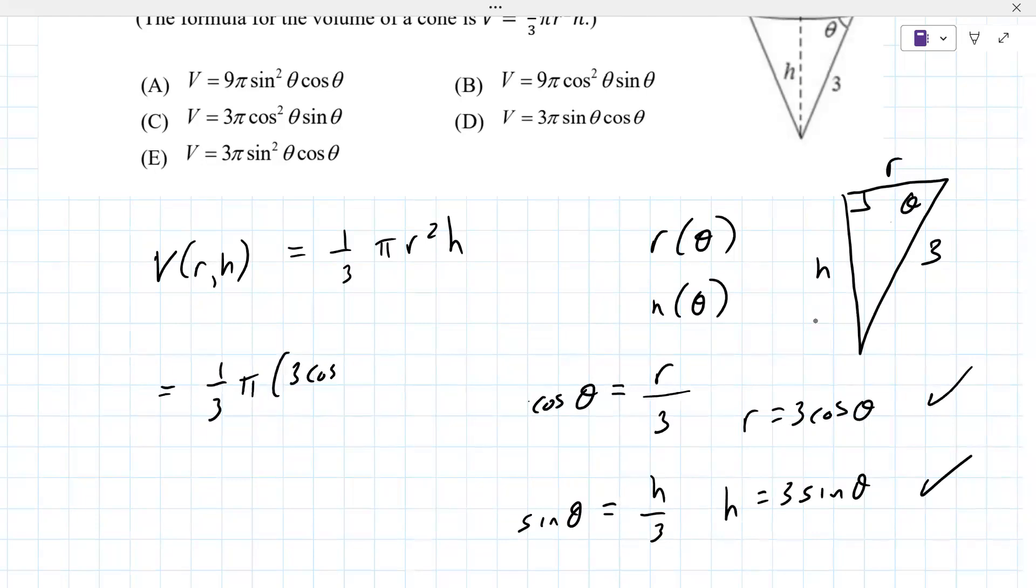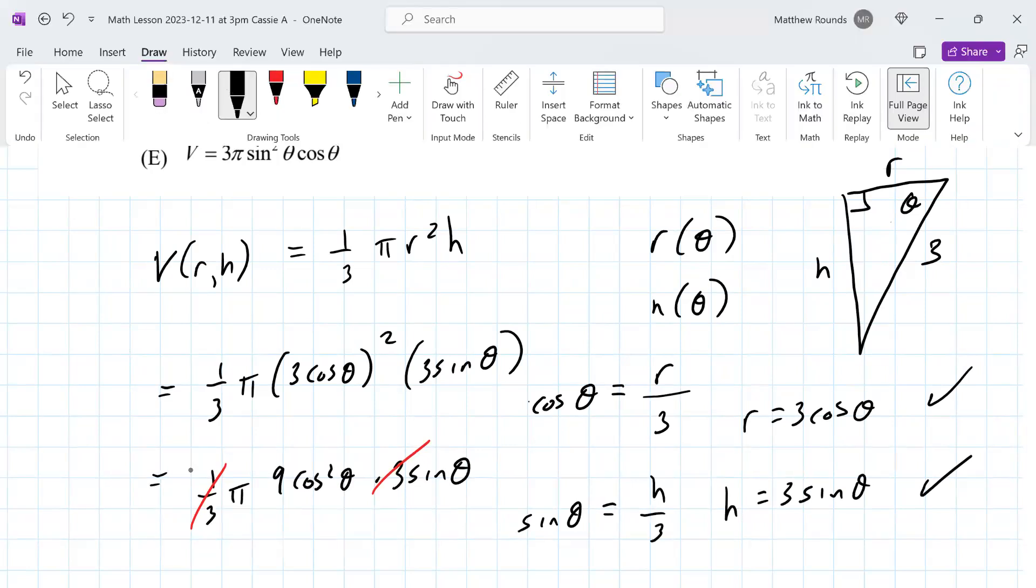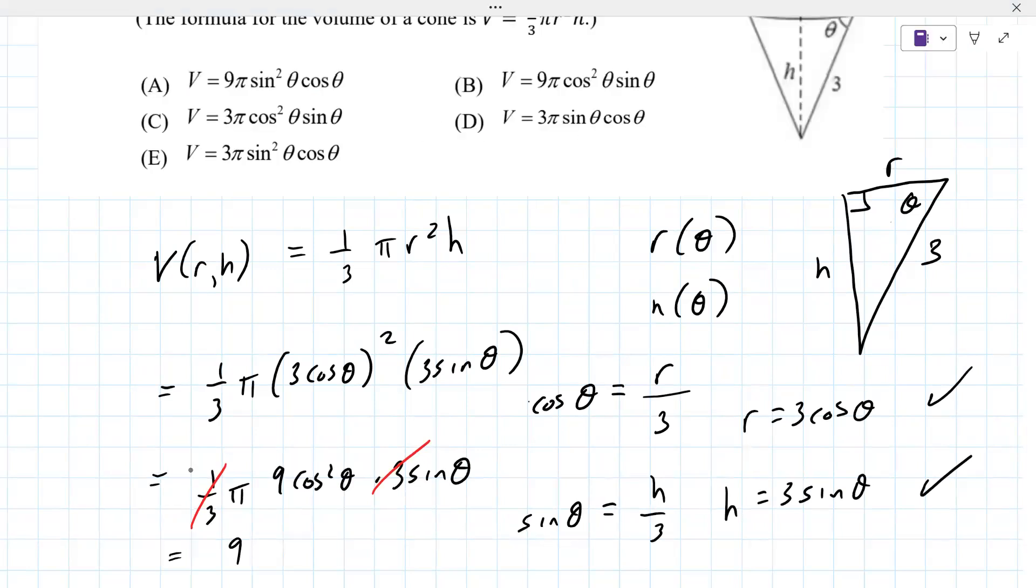Instead of R, it's going to be 3 cosine theta squared, and then 3 sine theta like that. So this becomes 9 cosine squared theta. It's common to put the square above the last letter, just notation. Times 3 sine theta. The 3 and the 1 third cancel, or you can do the 9 and the 1 third, then multiply by 3. But it ends up being 9 pi cosine squared theta sine theta.